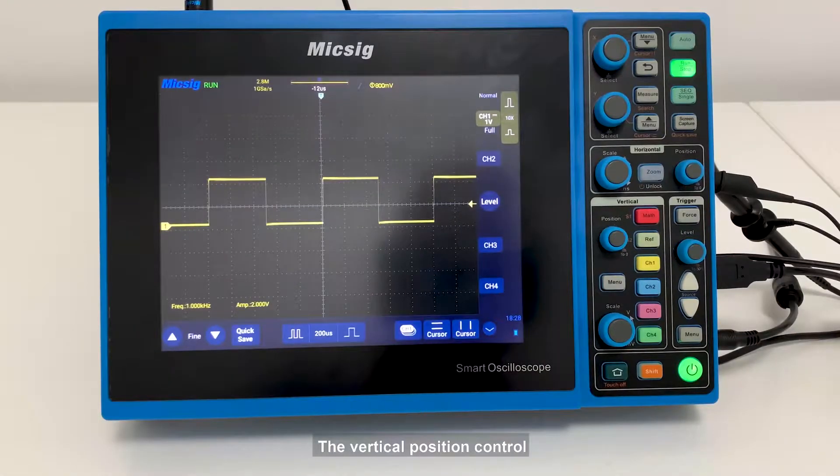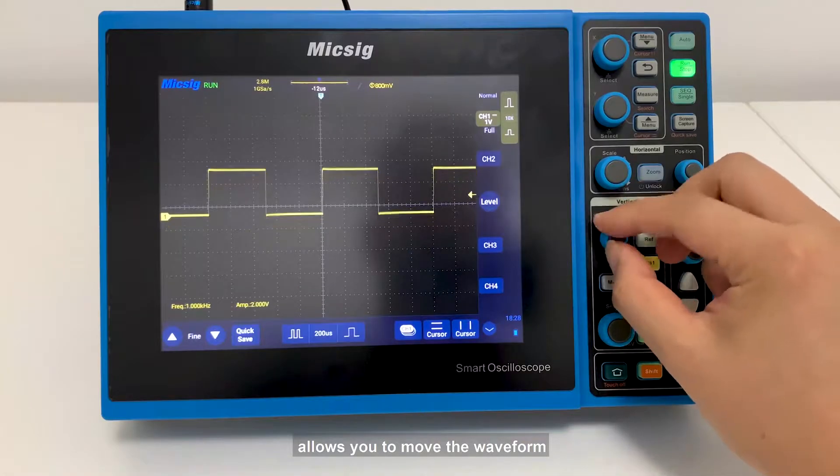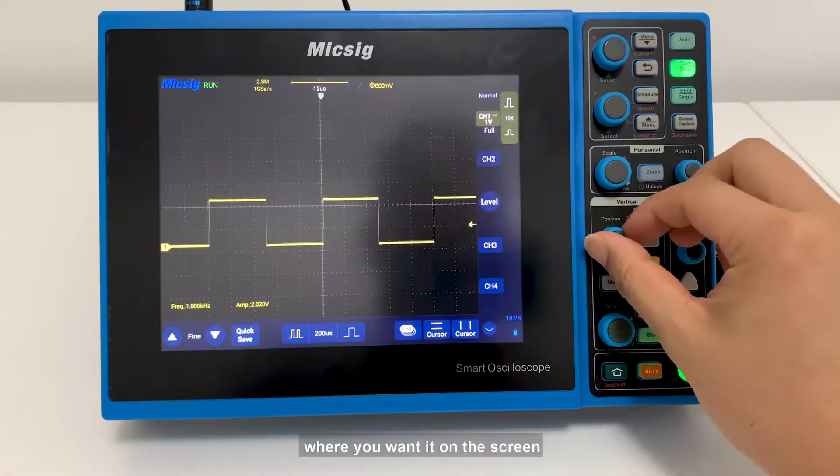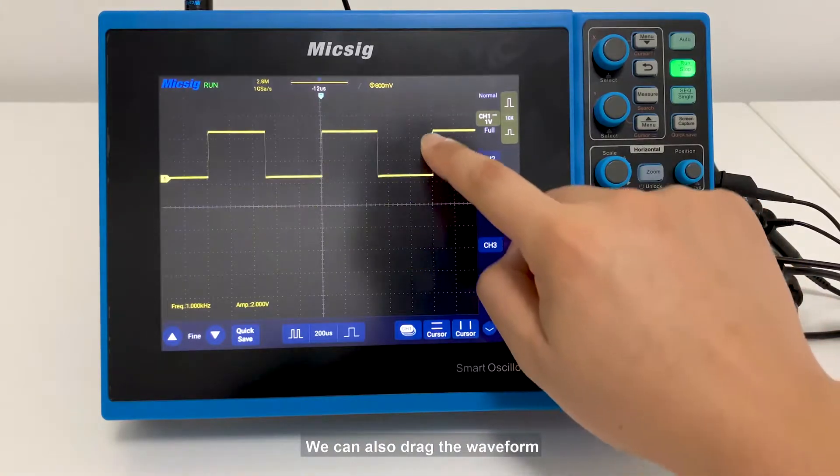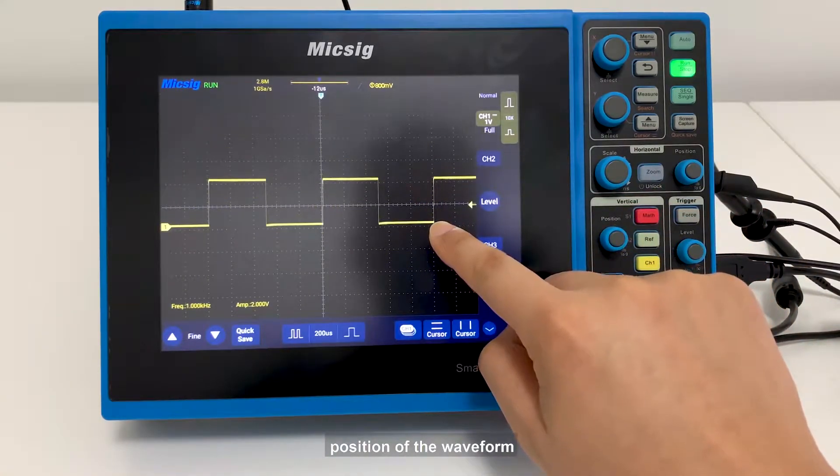The vertical position control allows you to move the waveform up and down, so it's exactly where you want it on the screen. We can also drag the waveform directly to change the vertical position of the waveform.